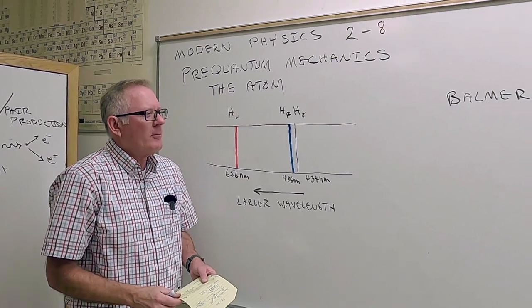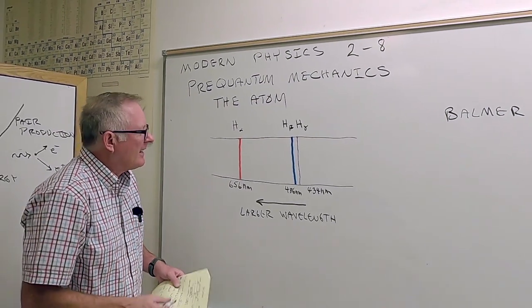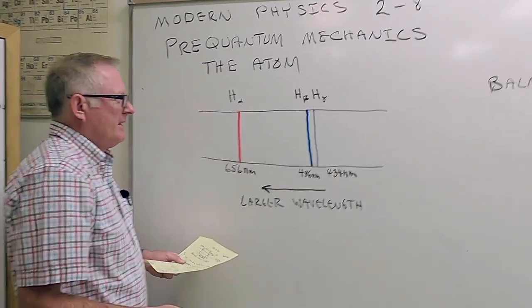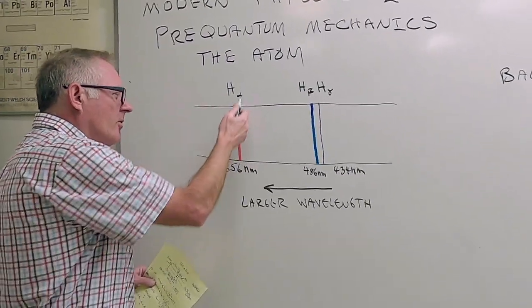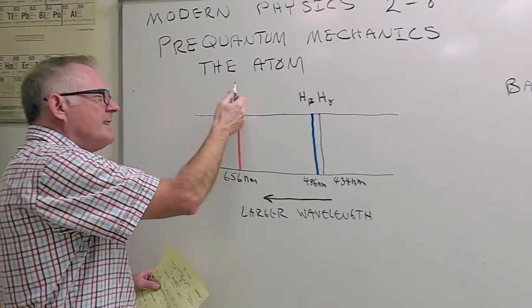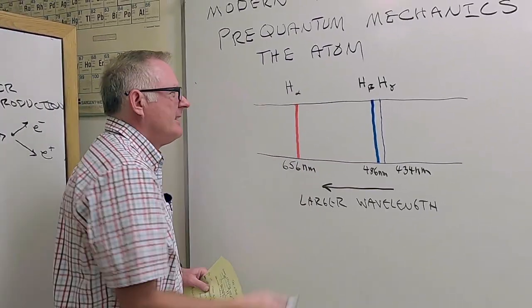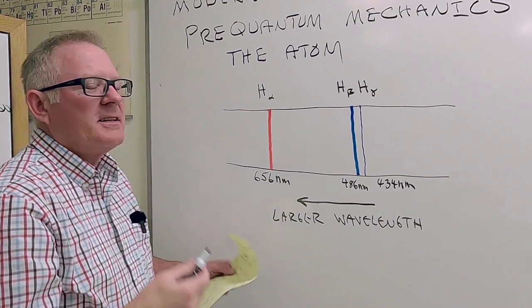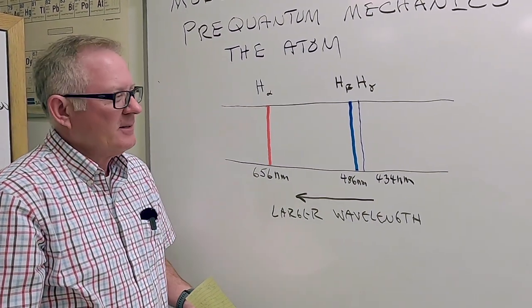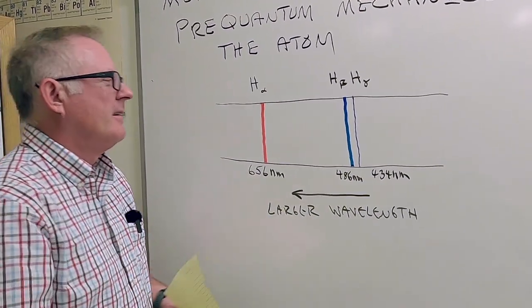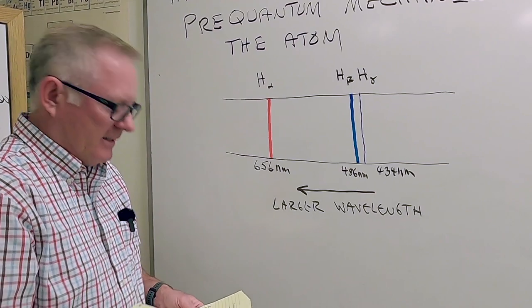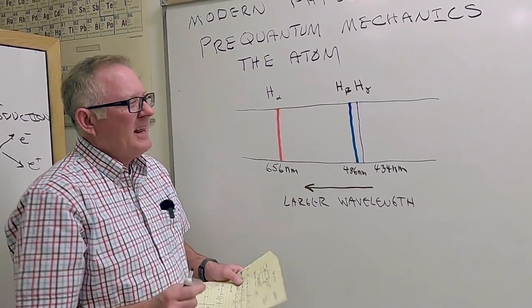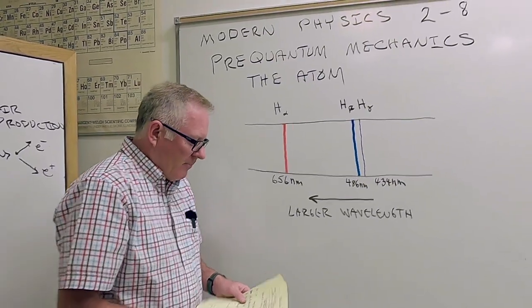The Balmer lines are very important astronomically because hydrogen dominates the universe. If you're looking at certain galaxies, you see a strong line, and you can use that for the Doppler effect to get the speed of galaxies. This work was done around 1885.